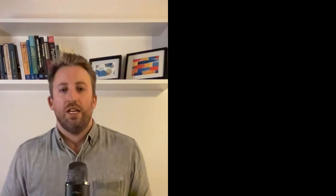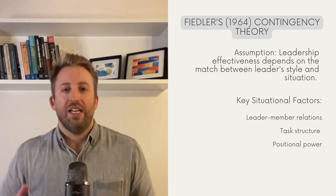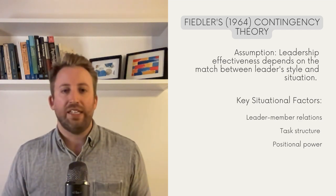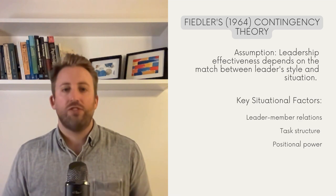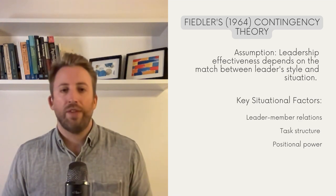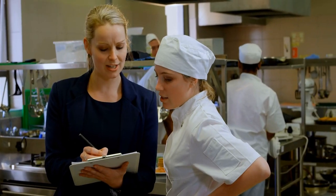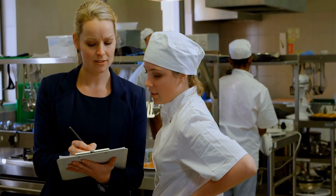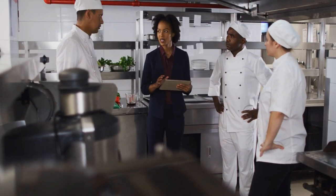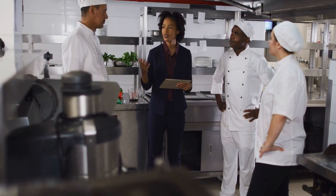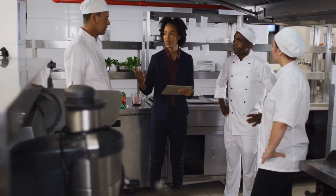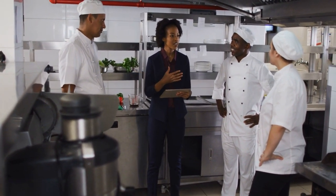Imagine a restaurant manager who needs to coordinate chefs, waitstaff, and other employees. The leadership situation, as Fiedler sees it, is dictated by these three ingredients: leader-member relations, task structure, and positional power. Picture this: the staff respect the manager, so leader-member relations are strong. The roles of everyone in the kitchen and on the floor are clear, so task structure is solid. And the manager has the final say in decisions, including hiring, firing, and rewarding employees — so positional power is firm.